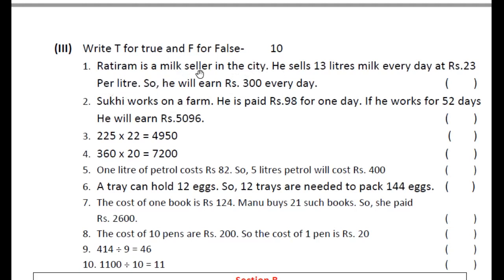True/False Q1: Rati Ram is a milk seller. He sells 13 liters of milk every day at rupees 23 per liter, so he will earn rupees 300 every day. Rati Ram milk seller है और वह 13 rupees per liter earn करता है. एक दिन में वह 23 liters milk sell करता है. इसके लिए 13 और 23 का multiply कर दीजिए. अगर 300 rupees आता है तो statement true है, नहीं आता है तो false है.